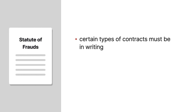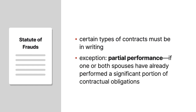The writing requirement stems from the statute of frauds, which requires that certain types of contracts be in writing to mitigate the risk of fraud. There are, however, exceptions to the statute of frauds. If an exception applies, then an oral premarital agreement may be enforceable. One key exception is partial performance, which arises if one or both spouses have already performed a significant portion of contractual obligations. More than merely entering the marriage is necessary.